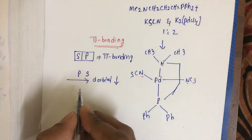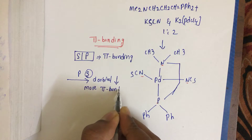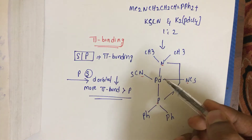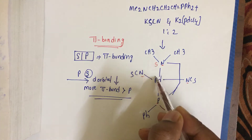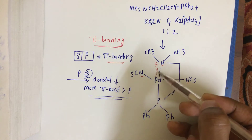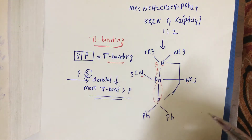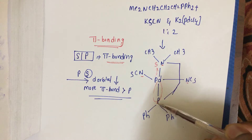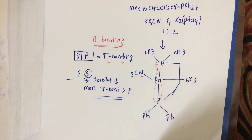Because d orbital size decreases, sulfur has a greater pi-bonding capacity than phosphorus. If sulfur is present, the metal-sulfur bond becomes stronger due to stronger pi bonding, which makes the trans metal-phosphorus bond weaker. This reduces bond order and we may not get a stable square planar geometry.